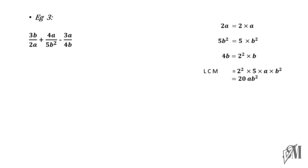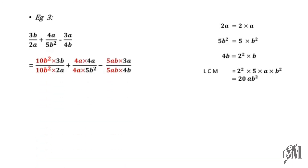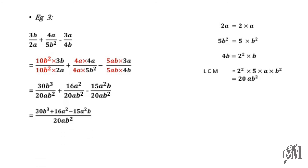Each denominator must be converted to 20ab squared. For the first fraction, the denominator is 2a — to make it 20ab squared you multiply by 10b squared, and so on. All three fractions must be multiplied by respective terms to reach 20ab squared. The common denominator becomes 20ab squared, giving 30b³ over 20ab squared, plus 16a² over 20ab squared, minus 15a²b over 20ab squared. Since all denominators are now the same, you can write down the simplified answer. This is how you simplify algebraic fractions with unequal algebraic terms in the denominator.